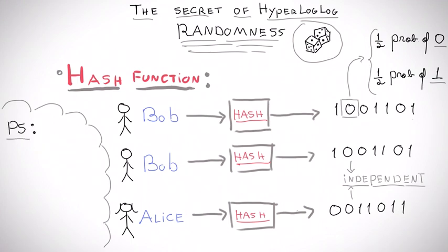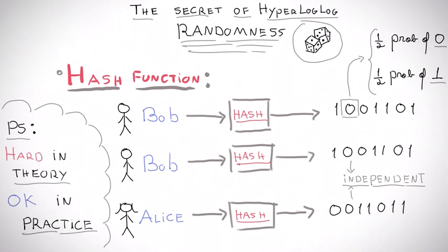There's a caveat here that's worth mentioning. In theory, such perfect hash functions probably do not exist. But in practice, we have hash functions that work well enough. So we can assume this perfect randomness without being too far off from reality.